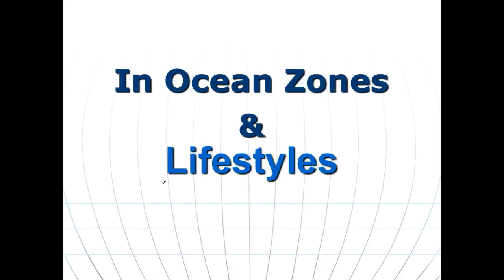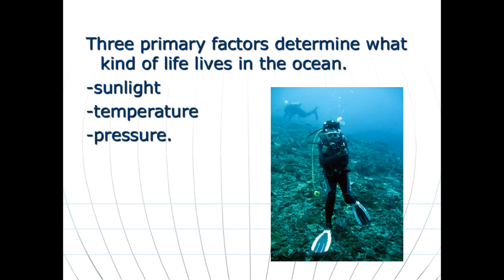Today we're going to talk about the ocean — specifically the zones of the ocean, how it can be divided into different areas, and the different lifestyles of organisms depending on where they live. There are three primary factors that determine what kind of life can exist in different zones: the amount of sunlight each zone receives, the temperature, and the pressure. Sunlight only penetrates so deep, temperature drops as you go lower, and pressure increases the further down you go.